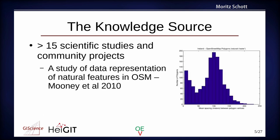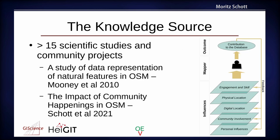We draw on many knowledge sources — more than 15 scientific studies and community projects have been analyzed and used. One is actually from Peter, a study from 12 years ago where he looked at the representation of natural features, and that is now incorporated in our tool. We also use our own knowledge — a paper from last year where we looked at how users are shaped by mapping in OpenStreetMap and what attributes users have when they map. They may be influenced by where they are, where they map from, and the location they are looking at.